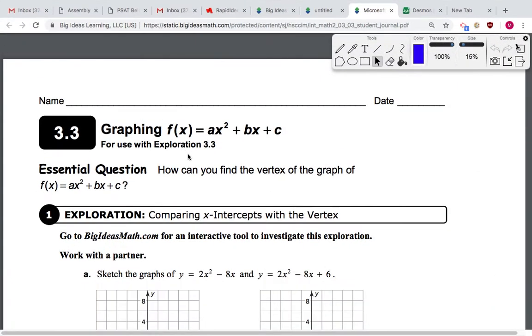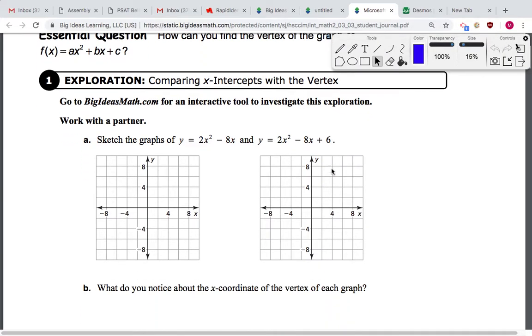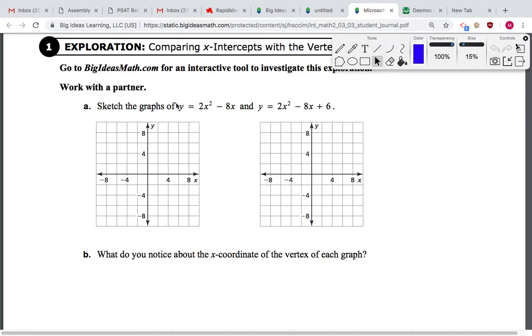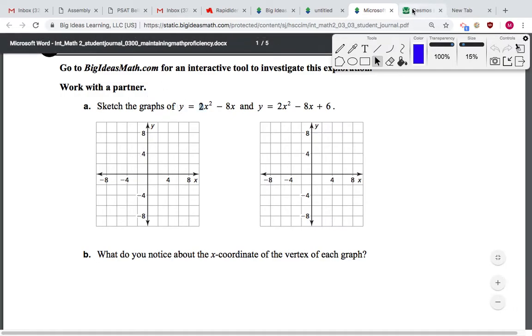Alright guys, we're on section 3.3 of your student journal, that's page 84. Graphing ax squared plus bx plus c. How can you find the vertex of the graph? Sketch the graphs first. So let's go there, work with a partner, use your phone or the Chromebook or whatever, or a graphing calculator.